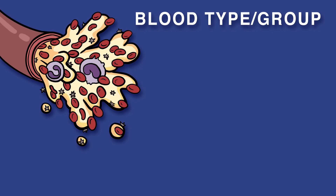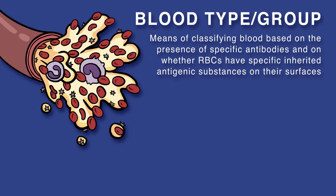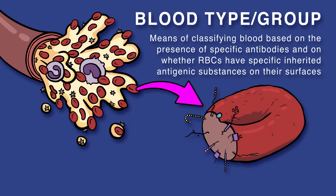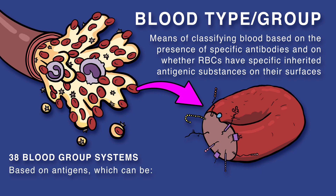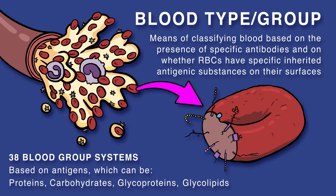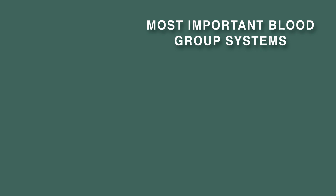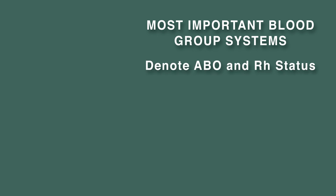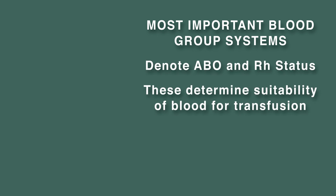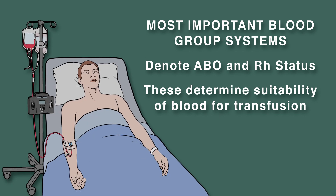A blood type or blood group is a means of classifying blood based on the presence of specific antibodies and on whether red blood cells have specific inherited antigenic substances on their surfaces. There are 38 of these blood group systems based on various antigens. These antigens can be proteins, carbohydrates, glycoproteins, or glycolipids. The most important blood group systems are those that denote ABO and RH status, since these determine suitability of blood for transfusion. We will be discussing them in this video.